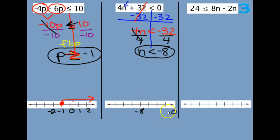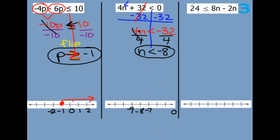0 would be over here — so 0, negative 1, negative 2, all the way over to negative 7, negative 8, negative 9 going this way. Open or closed circle — this one does not have an equal to, so it's an open circle. It forms an L, so less than negative 8 would be towards negative 9, or to the left.